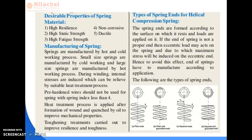Before we choose the material for the spring, we have to see what properties are required according to the function and application of the spring. There are five mechanical properties considered for the material used for a spring. First of all, High Resilience. Resilience means the amount of energy stored by the material of the spring up to the elastic limit. It should have high capacity to store energy during application of load.